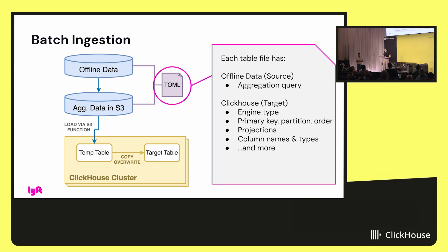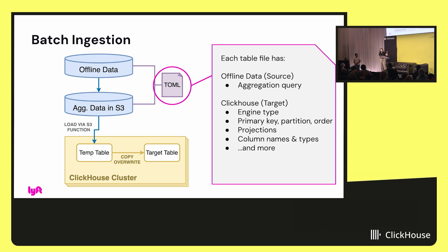Going into more detail on batch ingestion: we have our offline datasets aggregated to S3, and we have a TOML-based cron setup where each table has a TOML file containing information about the source data, how we're aggregating it, and the target ClickHouse table information. This is a nice way to organize everything and run it automatically in a cron setup — so if we want to change columns or do schema evolution, this cron figures it out and solves it for us.